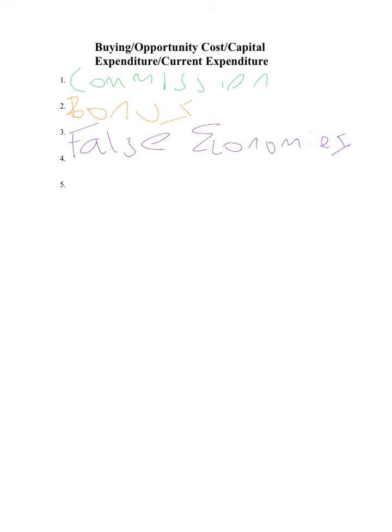The next one is impulse buying, and we are all guilty of this. This is when you buy something on the spur of the moment — unplanned spending. If you walk into the shop for bread or milk and you end up coming out with two bars of chocolate and a packet of popcorn, in other words you buy things you didn't plan to buy, that's impulse buying. Make sure you give this definition and its example.